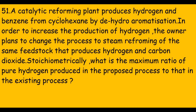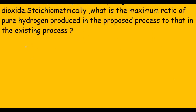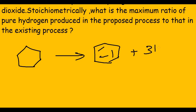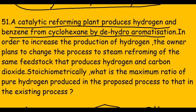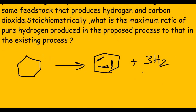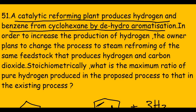This two-mark question says: a catalytic reforming plant produces hydrogen and benzene from cyclohexane by dehydroaromatization. Writing the reaction: cyclohexane → benzene + 3H2, since three hydrogen molecules are released to form the double bonds. This is the stoichiometric equation for the existing process.